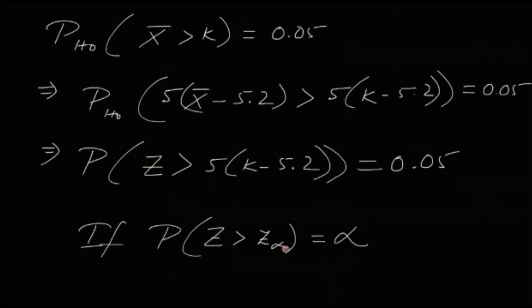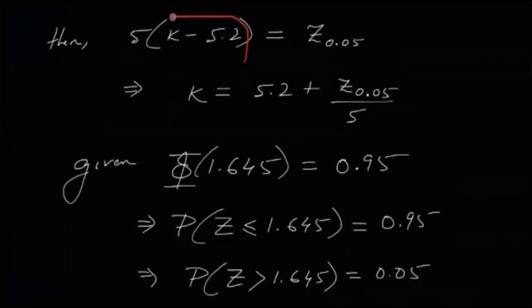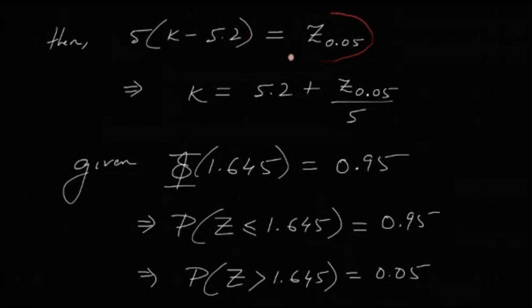For a standard normal Z, P(Z > z_alpha) = alpha, where z_alpha is the upper cutoff point — the value beyond which the probability equals alpha. Since P(Z > 5(k − 5.2)) = 0.05, we conclude that 5(k − 5.2) = z_0.05, and therefore k = 5.2 + z_0.05 / 5.